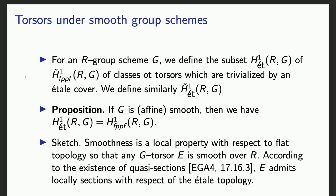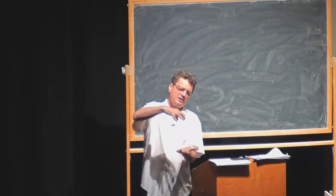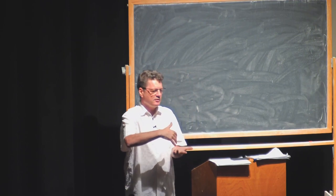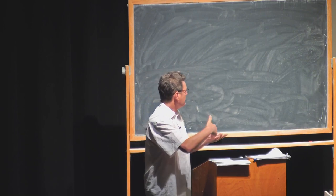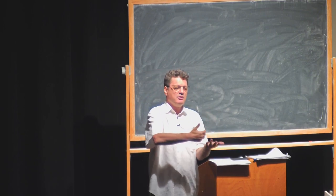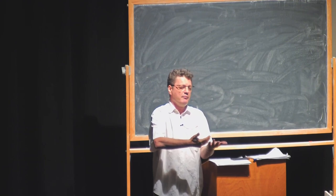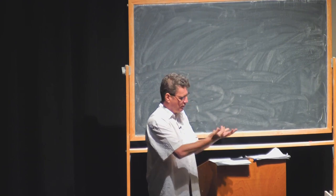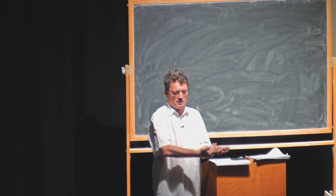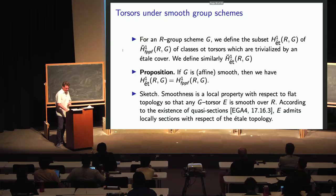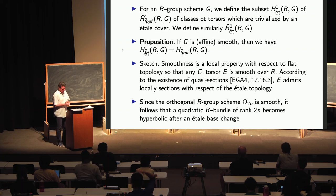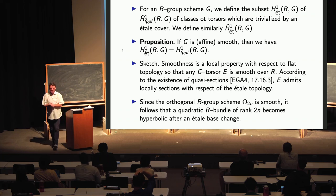Once you know a scheme is smooth over something, there is an important result in EGA called the quasi-section theorem, which tells you that you can find points locally with respect to the étale topology. An example seen yesterday in the problem session: the orthogonal group scheme O(2N) is smooth (the only issue is characteristic two), and it follows that O(2N)-torsors are locally trivial for the étale topology.